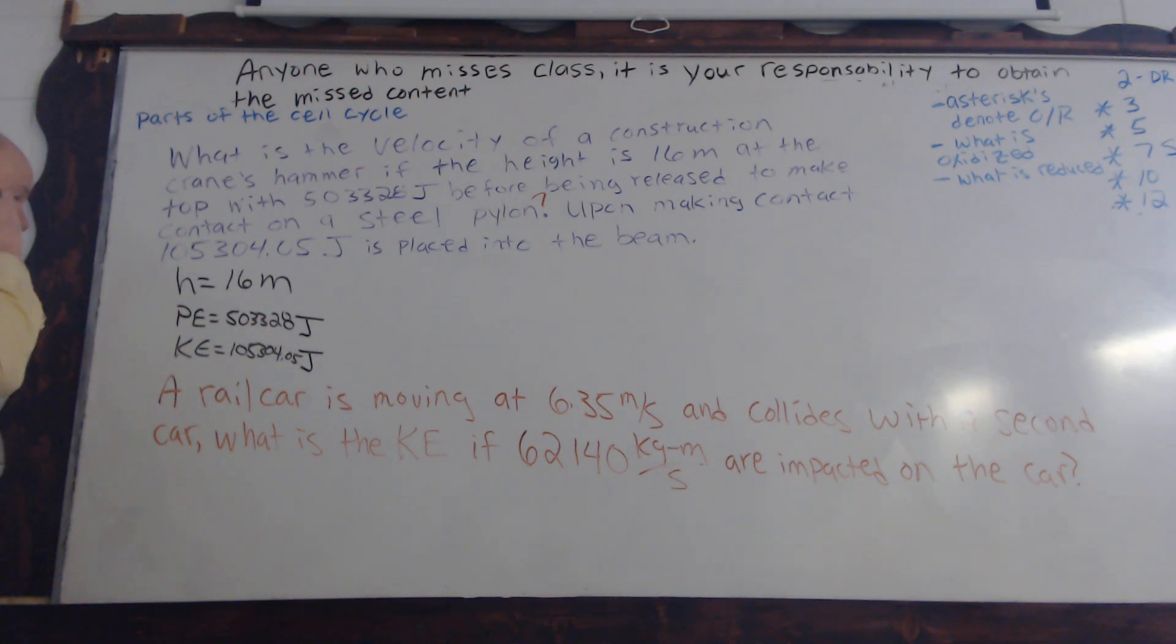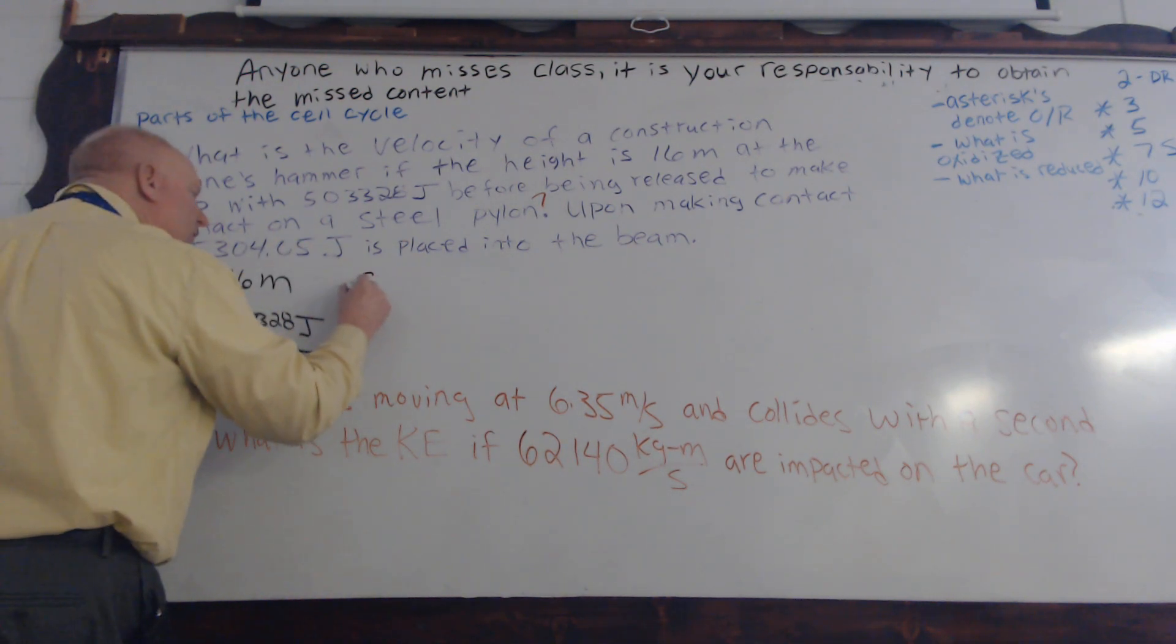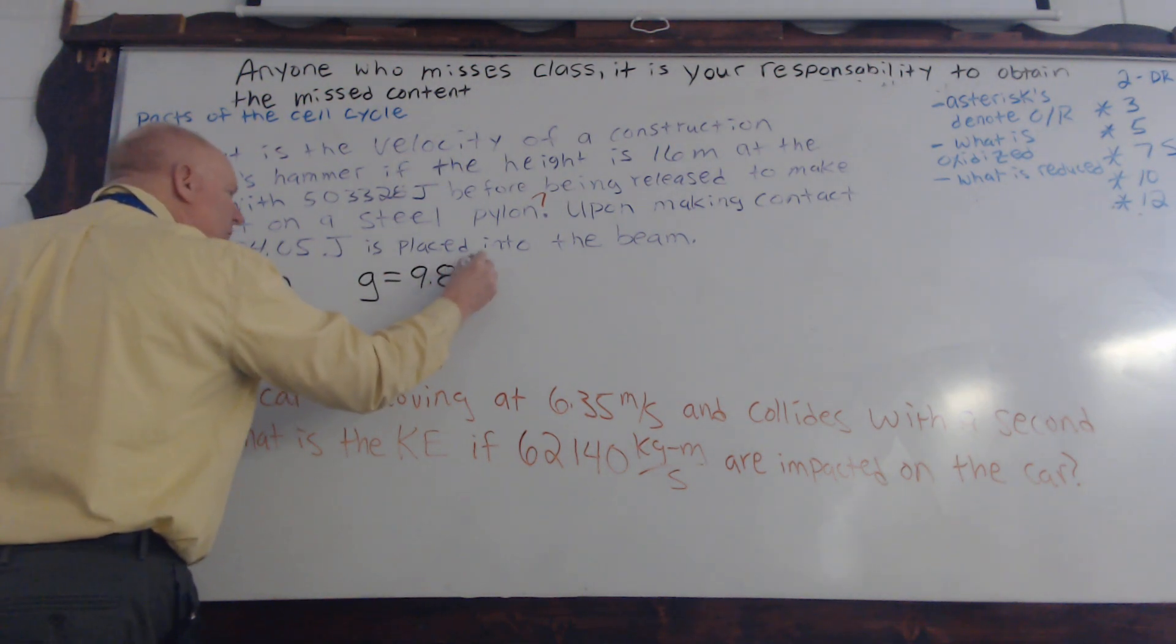So then, the kinetic energy, 105,304.05. So then, it's at this point, are we out of numbers? No, we are not. There's still one more we have to compensate for. Gravity. So gravity, of course, we know is 9.8 meters per second squared.